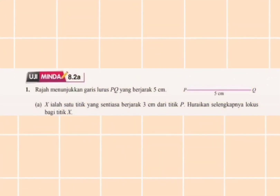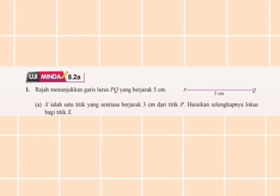Uji Minda 8.2a soalan 1: Rajah menunjukkan garis lurus PQ yang berjarak 5 cm. Soalan A: X ialah satu titik yang sentiasa berjarak 3 cm dari titik P. Huraikan selengkapnya Locus bagi titik X. Titik P merupakan satu titik tetap, maka bentuk yang dihasilkan ialah bulatan. Jawapannya: Locus X ialah satu bulatan yang berpusat di P dan berjari-jari 3 cm.